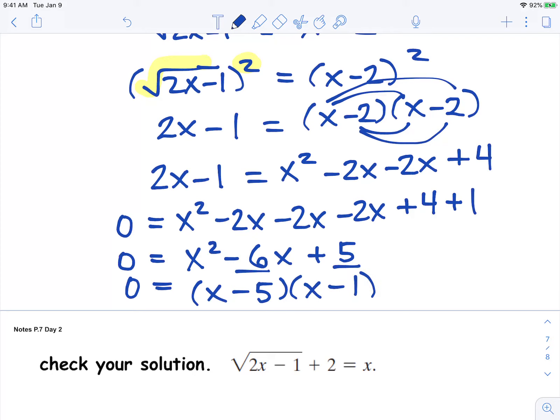Now we're going to use our zero product property. We're going to set x minus 5 equal to 0 and solve it for x. And then x minus 1 equal to 0 and solve for x.